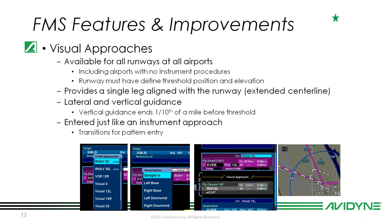Visual approaches require the runway to have a defined threshold position and elevation — if it's in the Jeppesen database, it should already be there. If you've got a private strip not yet in the database, you won't be able to set up a visual approach because it doesn't have that defined threshold and elevation. If it's in there, you should be good to go. It provides a single leg aligned with the runway extended centerline as your final.